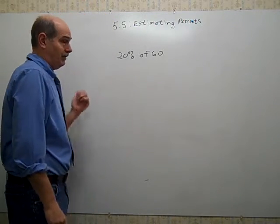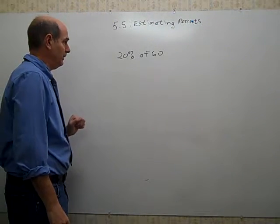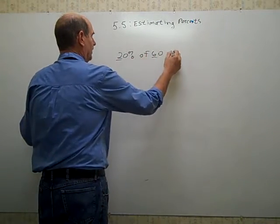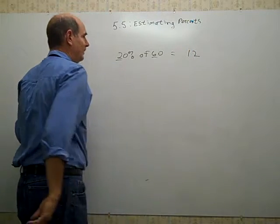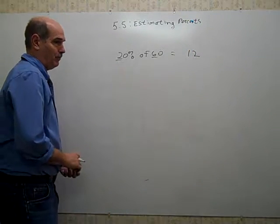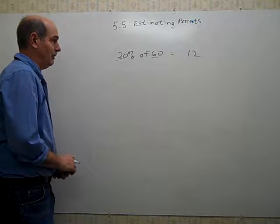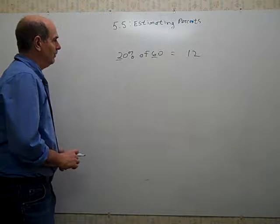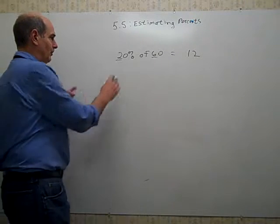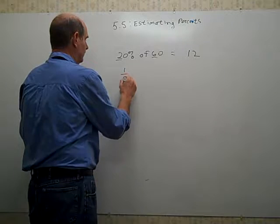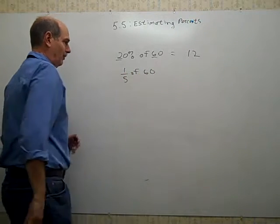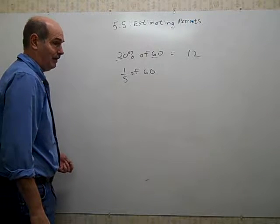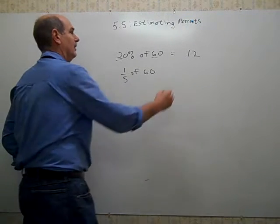So to find 20% of 60, to get this exact answer, you can remember that of means multiplying. And you can just multiply these two digits together. Two times six gives you 12. Is 20% of 60, is it reasonable to say it's 12? You could use another method to convert 20% to one-fifth. You could figure out what one-fifth of 60 is, which would involve dividing 60 into five equal parts. If you do 60 divided by 5, you get 12, which tells you this is the right answer.